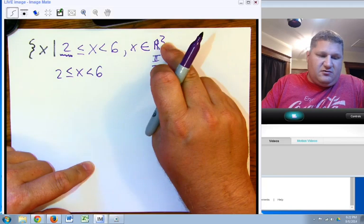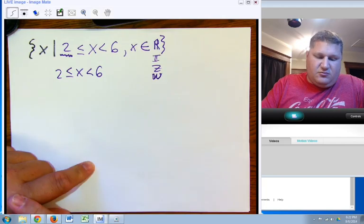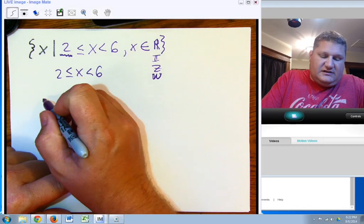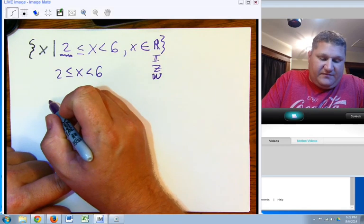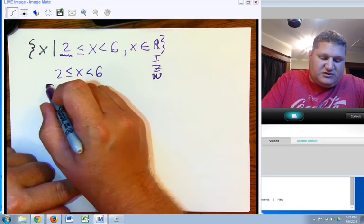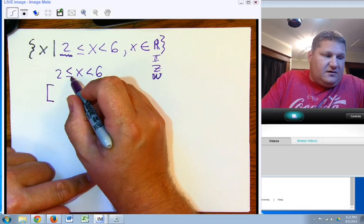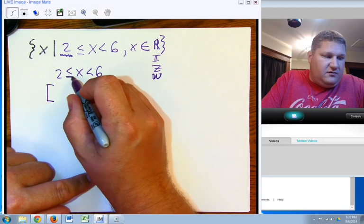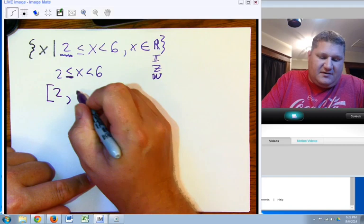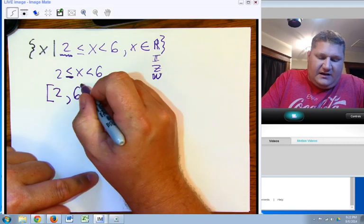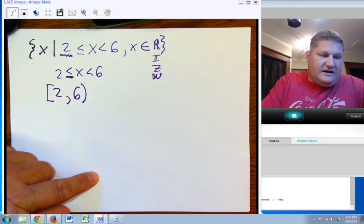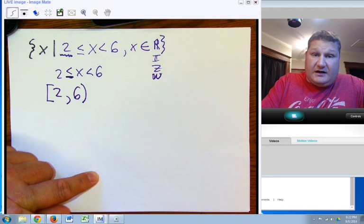But since we're talking reals, it's all the decimals in between. If we were to list it in interval notation, interval notation is going to use a bracket for anything where the number is equal to or included. So it's 2, 6 and uses a parenthesis for anything that is not actually included.